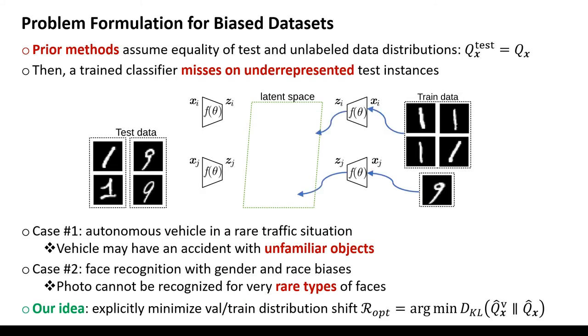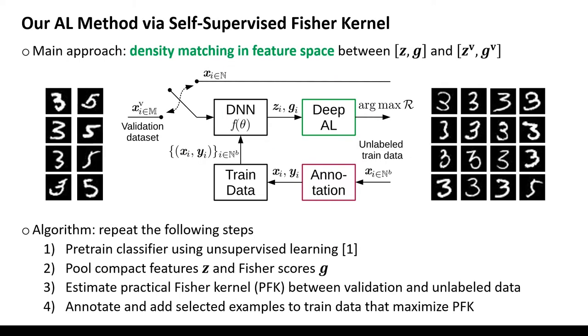Unlike previous methods, we consider a setup where test and train distributions diverge. We explicitly minimize distribution shift between validation and train data using Fischer kernel.